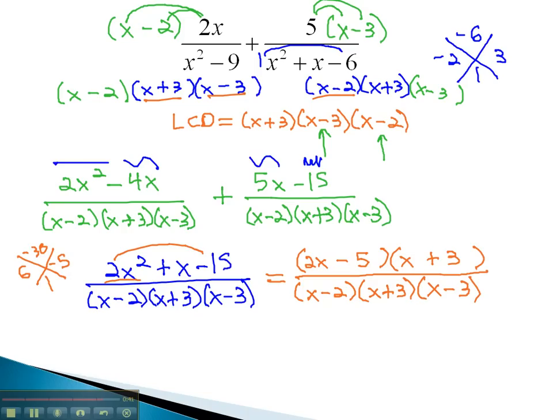Notice that our factored expression does have some factors that can reduce. The x plus 3's on top and bottom divide out, and we're left with 2x minus 5 over x minus 2 times x minus 3.